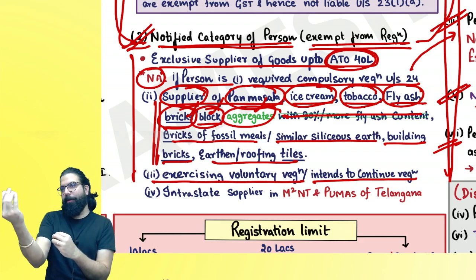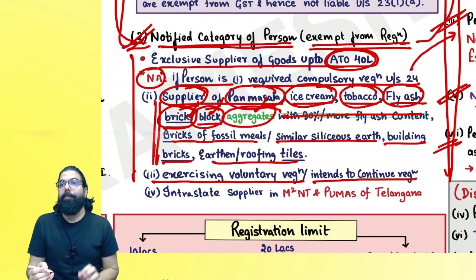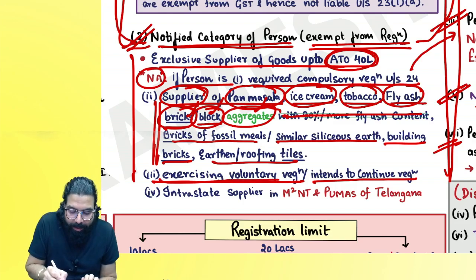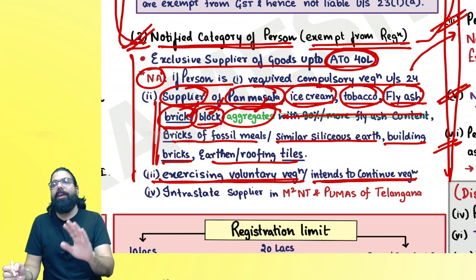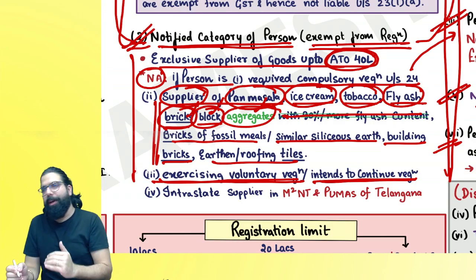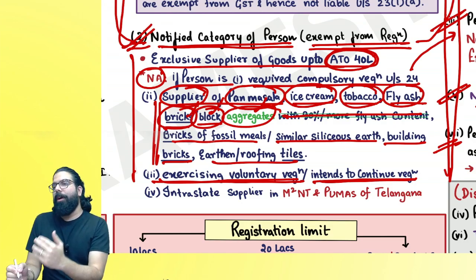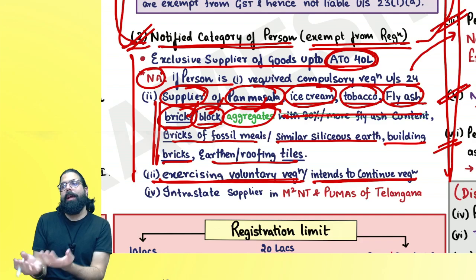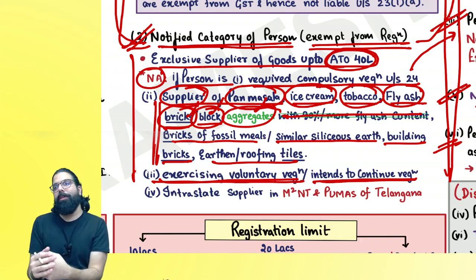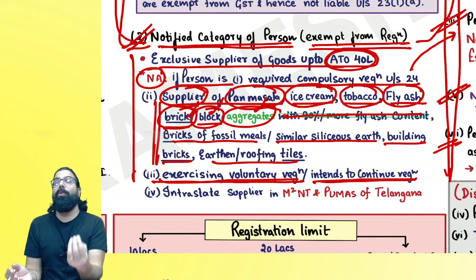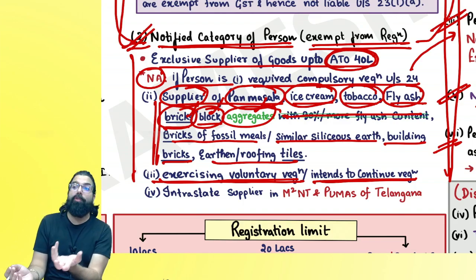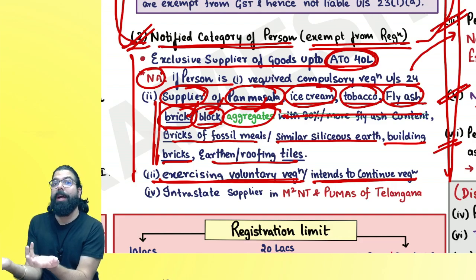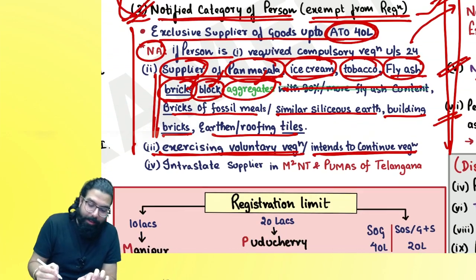If you are a person exercising voluntary registration or intending to continue with registration, the government says the ₹40 lakh limit is not available to you — you have chosen to remain registered. Also, if you are doing interstate supply in states of M² and T or PUMAS of Telangana, the ₹40 lakh limit is not available.